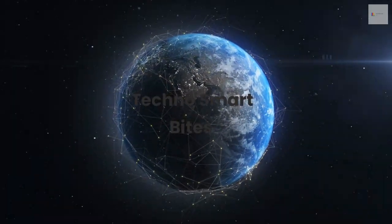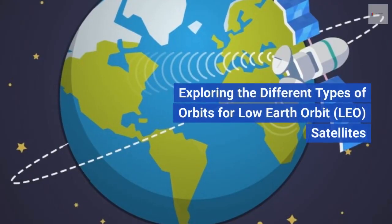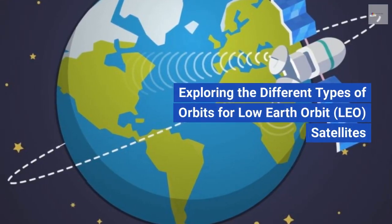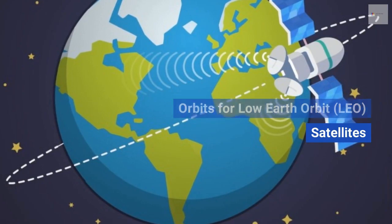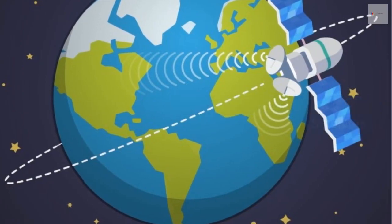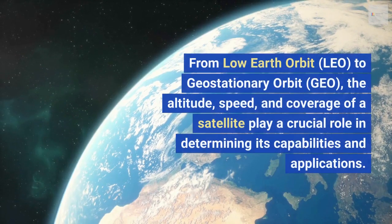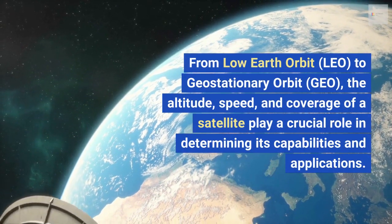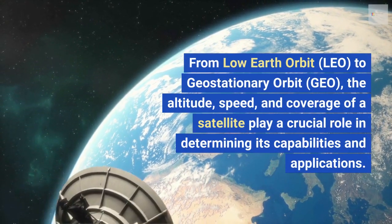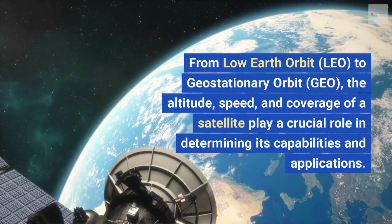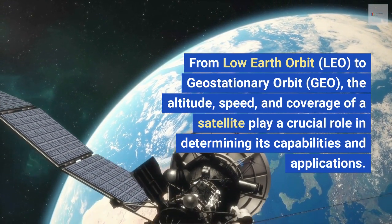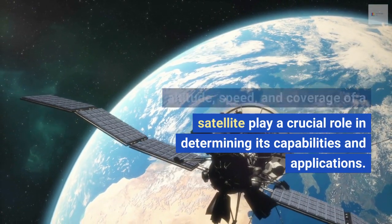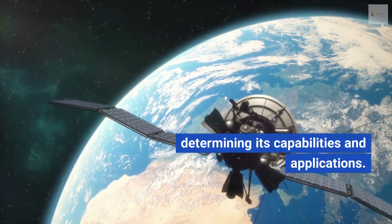Techno Smart Bytes: exploring the different types of orbits for satellites, from low earth orbit (LEO) to geostationary orbit (GEO). The altitude, speed, and coverage of a satellite play a crucial role in determining its capabilities and applications.